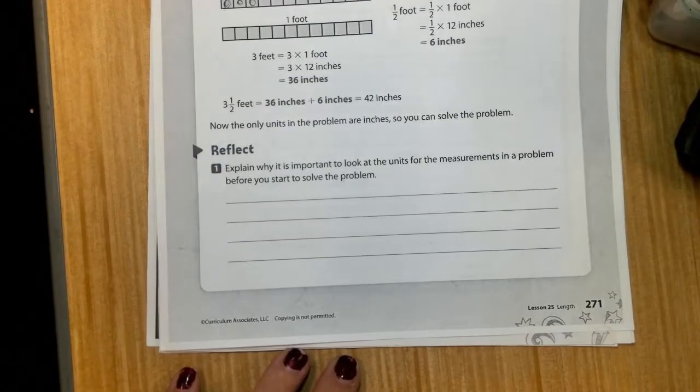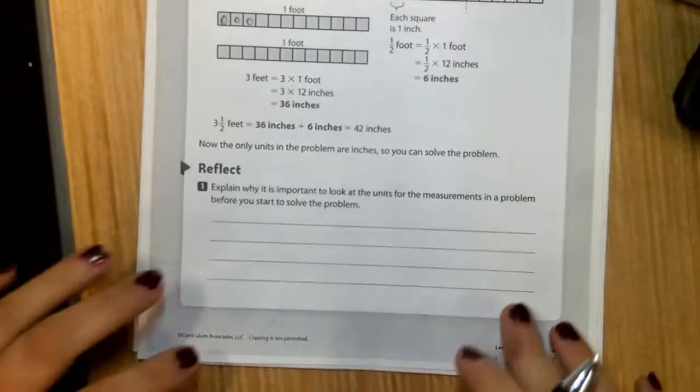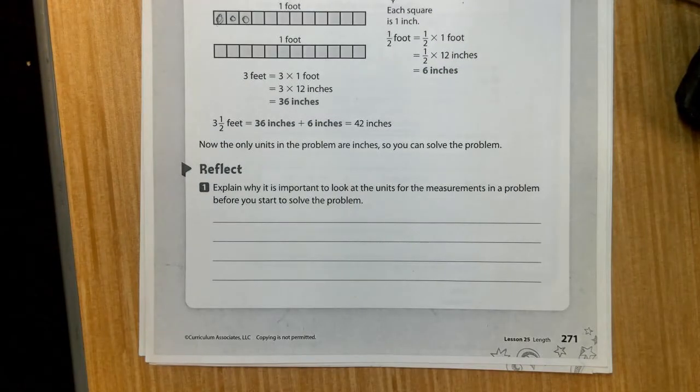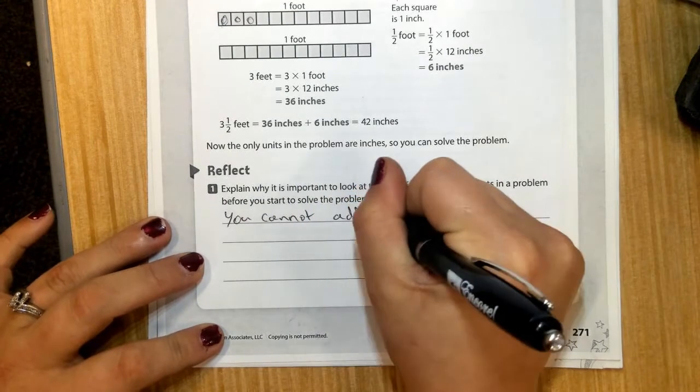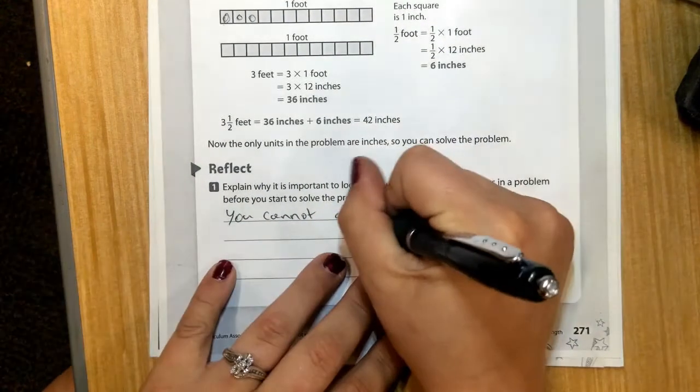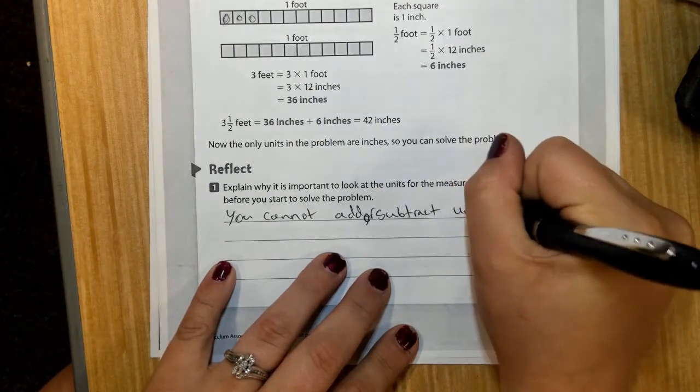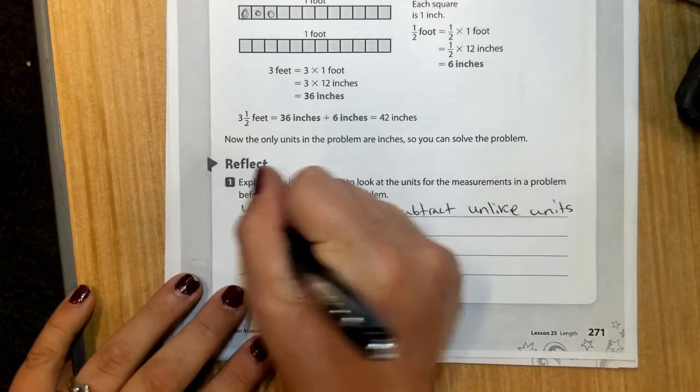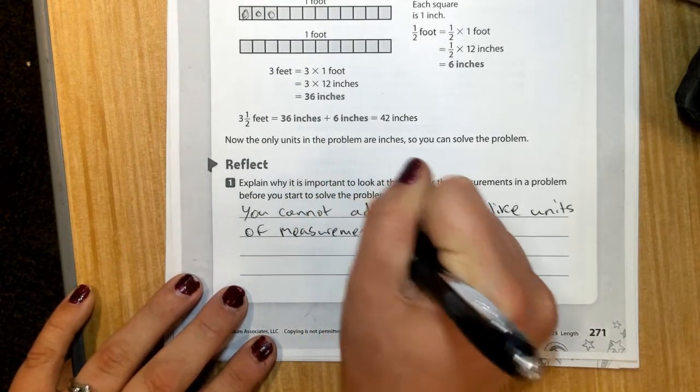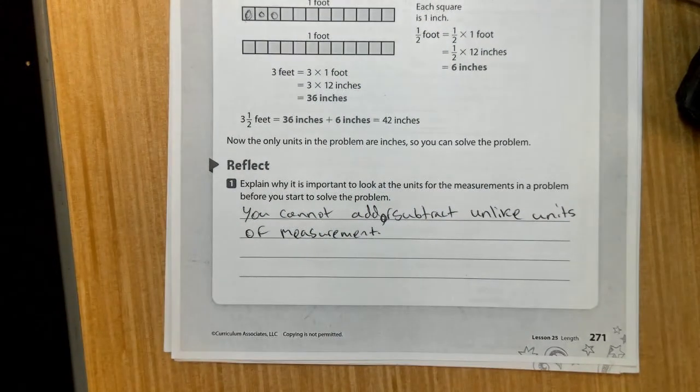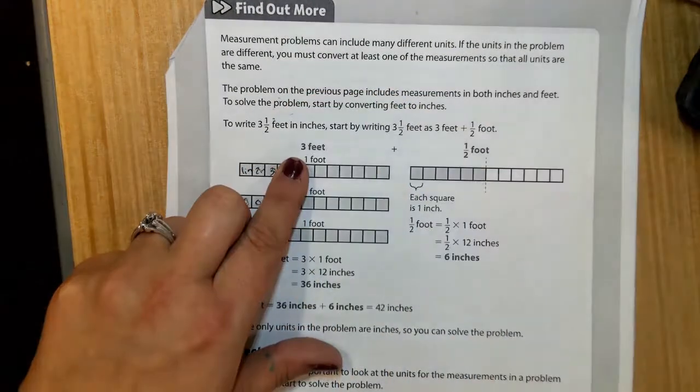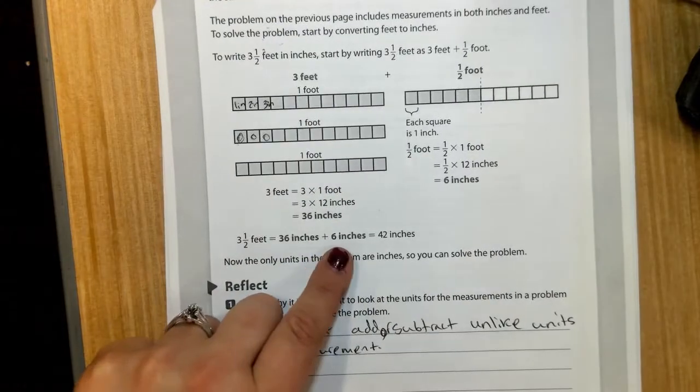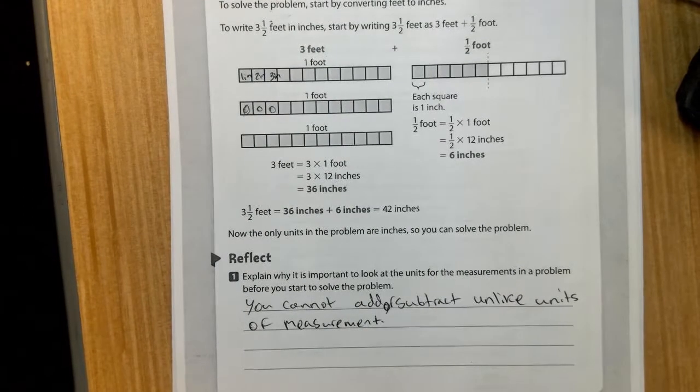Looking at the reflection, it says explain why it is important to look at the units for the measurement in a problem before you start to solve the problem. Well, you cannot add or subtract unlike units of measurement. We cannot compare them. We have to make them all the same unit. For some problems, you might even have to first convert some of the measurements so that all the units are the same like we did here. We had to convert our 3 1⁄2 feet into inches before we determined whether or not she's going to be tall enough or not.